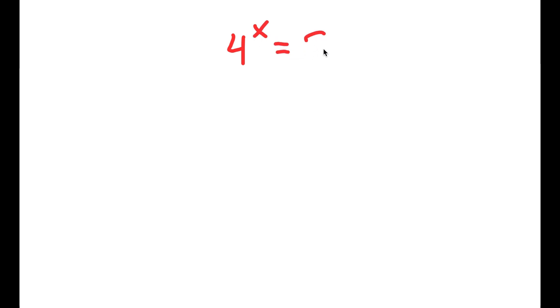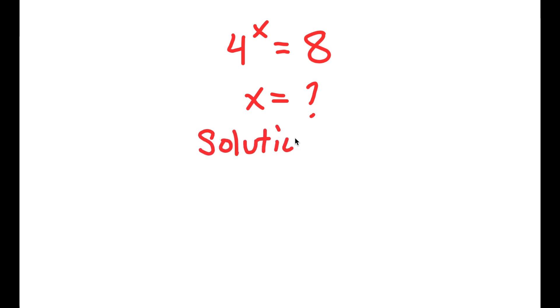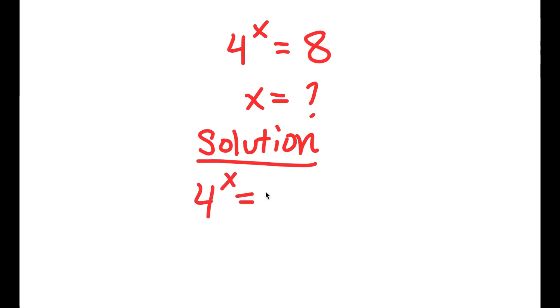In this problem I have 4 to the power of x is equal to 8. I want to find the value of x. For my solution, I'll start by rewriting the problem: 4 to the power of x is equal to 8.